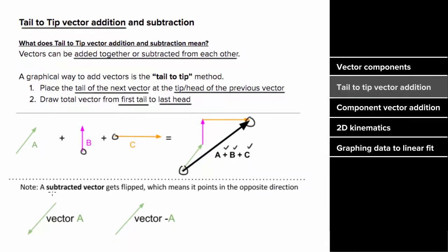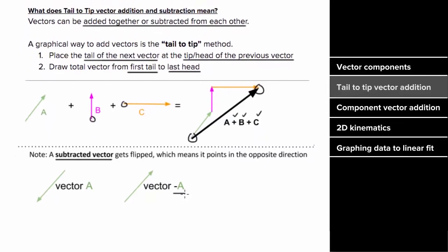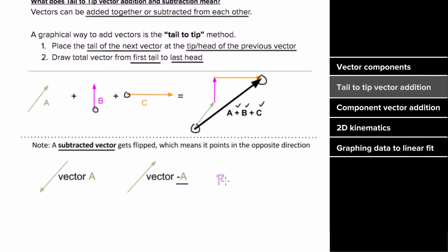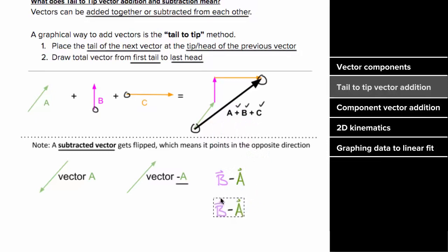And if you had to subtract a vector, you could still use vector addition — simply add the negative of that vector. In other words, if you had some vector b and you wanted to subtract vector a, instead of thinking of it as subtracting vector a, think of it as adding negative vector a. And the way you find vector negative a is by taking vector a and simply placing the arrowhead on the other end of the vector.